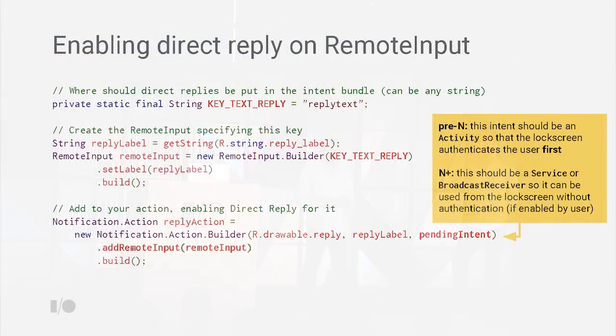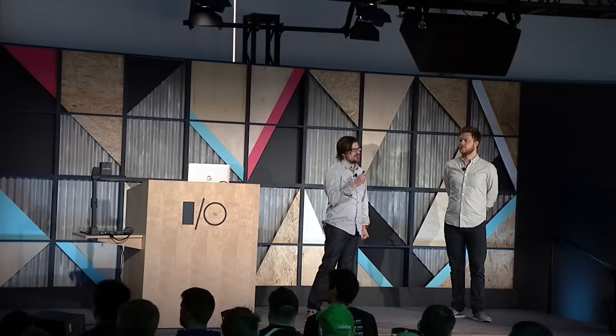If you've never used this API before — it was introduced with API 20 for Wear — you want to build something called RemoteInput. RemoteInput is something you hang off of an action that says: if you know how to send me text back, please do it in this way. You set up a specific key so that when you get your intent back from that action click, you can extract out the text entered. Important note: if you've been using remote input, you probably have an activity as the pending intent. For that action, it really needs to be a service or a broadcast receiver. If you have an activity intent on the lock screen, the lock screen will pop up an authentication challenge. What you want for remote input is for it to go to a background thing like a broadcast receiver or a service, so there's no authentication required.